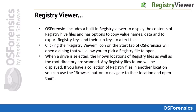Clicking the Registry Viewer icon on the Start tab of OS Forensics will open a dialog that will allow you to pick a registry file to open. When a drive is selected, the known locations of registry files as well as the root directory are scanned. Any registry files found will be displayed. If you have a collection of registry files in another location, you can use the Browse button to navigate to their location and open them.